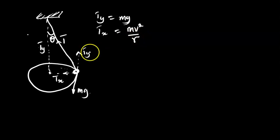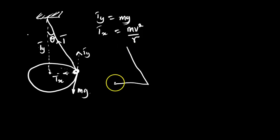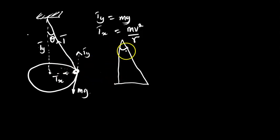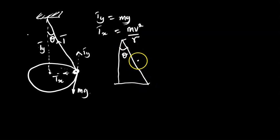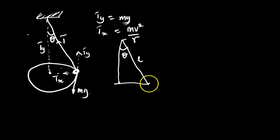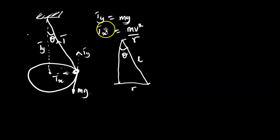From the string, you can observe it forms a right-angled triangle, where theta is the angle, T is the tension, and the string has a length l. From the center to the pendulum is the radius of the circle — let's call that r.